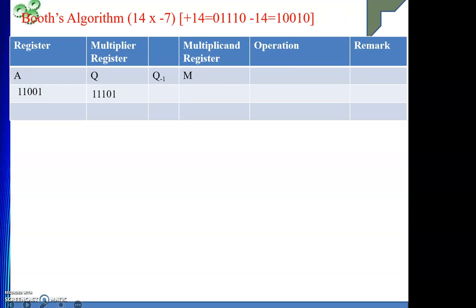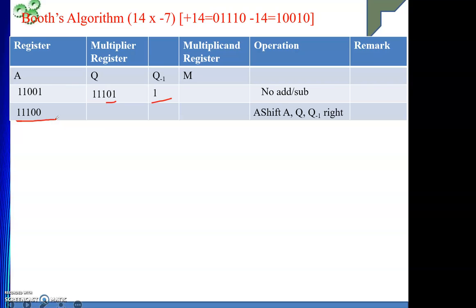In the final cycle, Q0 = 1 and Q−1 = 1 — same consecutive bits — so no addition or subtraction. We perform arithmetic shift right on A, Q, and Q−1. A becomes 11100, Q becomes 11010. Decrement count to 0. Once count reaches 0 we stop.